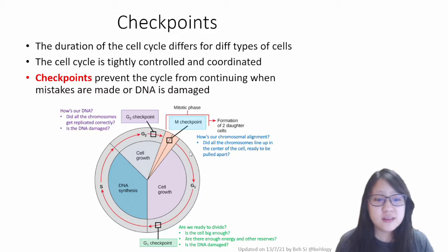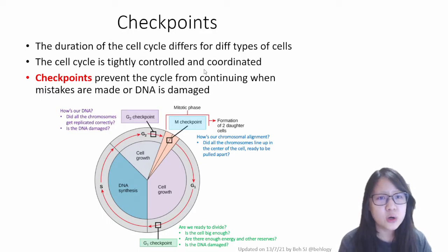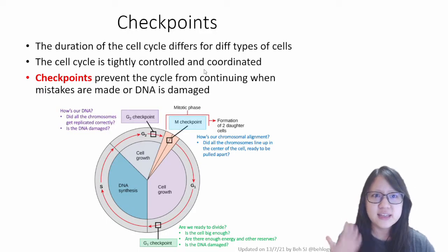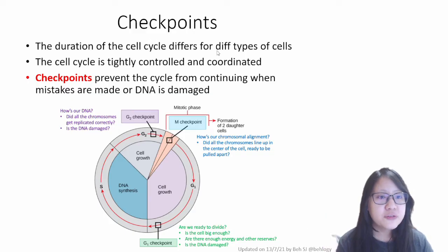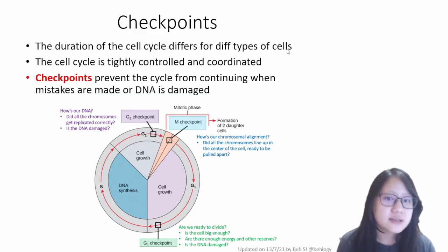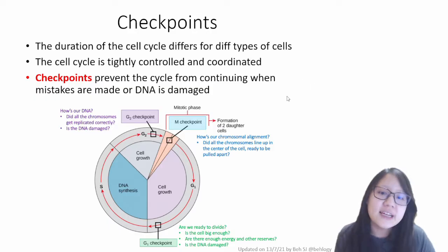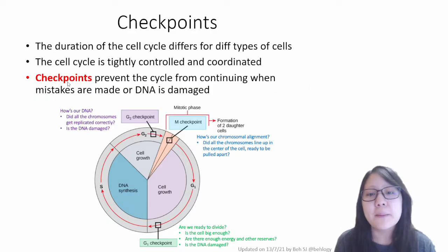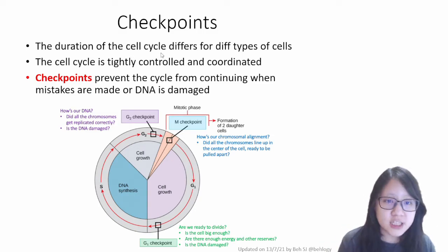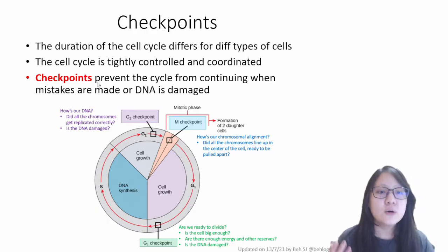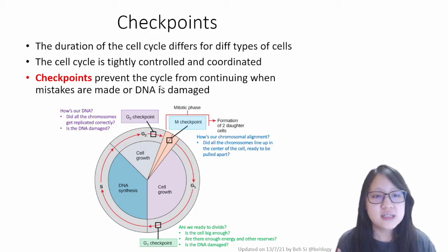Now at different stages of the cell cycle, there are actually different checkpoints in order for the cell to make sure things are actually functioning properly. The duration of the cell cycle might differ for different types of cells and is tightly controlled and coordinated. The purpose of these checkpoints is also to prevent the cycle from continuing when there is something wrong.